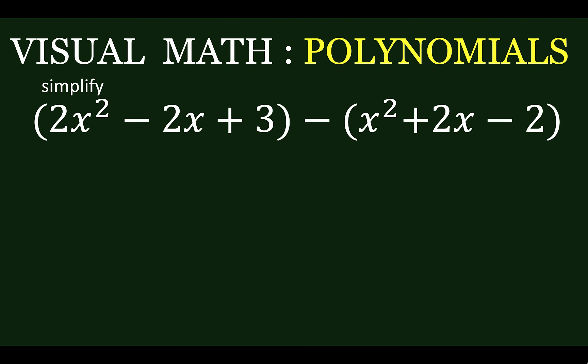Let's say we are asked to simplify the quantity 2x squared minus 2x plus 3 minus the quantity x squared plus 2x minus 2. Now, notice that there is now this grouping symbol.